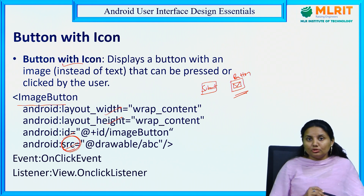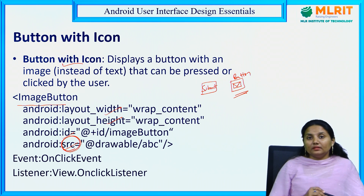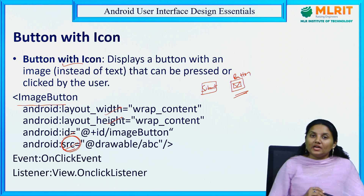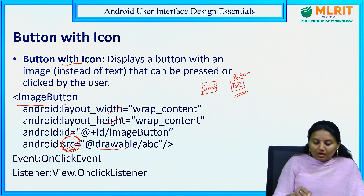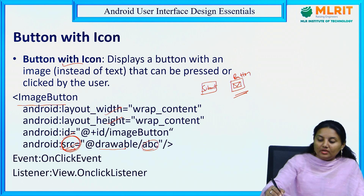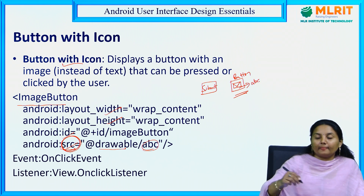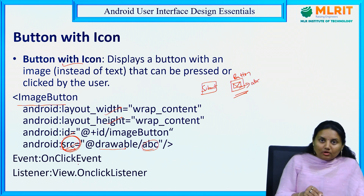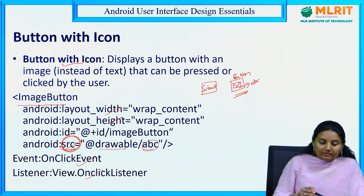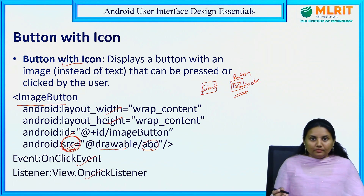The source will be under resources, in the drawable folder, where we put our image. That image can be accessed using the source as @drawable/abc, where abc is your image name. The event is again onClick, because the image is acting as a button. So the event is onClick and the listener is View.OnClickListener.